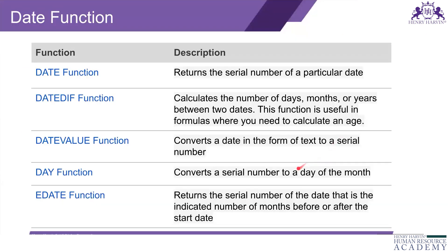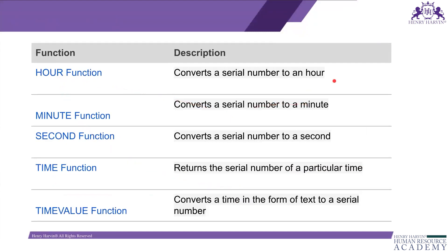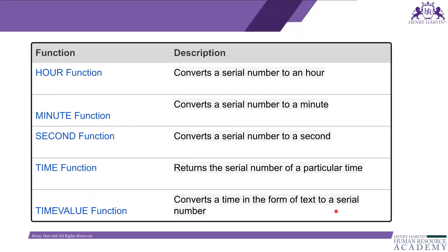The DATEVALUE function converts a date in text form to a serial number. The DAY function converts a serial number to a day of the month. The EDATE function returns the serial number of a date a specified number of months before or after a start date. The HOUR function converts a number to an hour, MINUTE converts a serial number to a minute, SECOND converts a serial number to a second, TIME returns the serial number of a particular time, and TIMEVALUE converts a time in text form to a serial number.